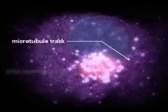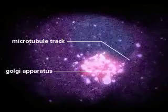At the next stage, transport intermediates move along microtubule tracks to the Golgi apparatus near the center of the cell.